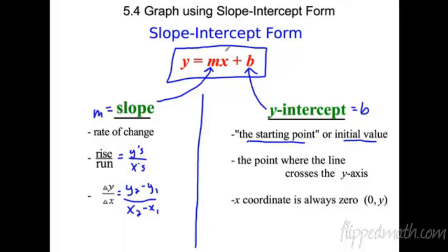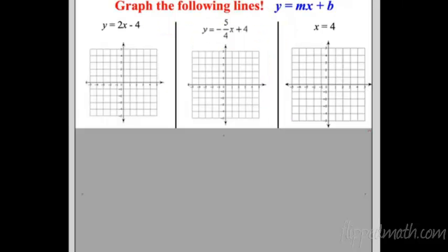Since x and y are always changing, they stay as variables. What's nice about slope-intercept form is I can instantly see the slope and instantly see the y-intercept. Finding the x-intercept does take a little bit of extra work, so that's a slight drawback, but overall it's the form we prefer to use.